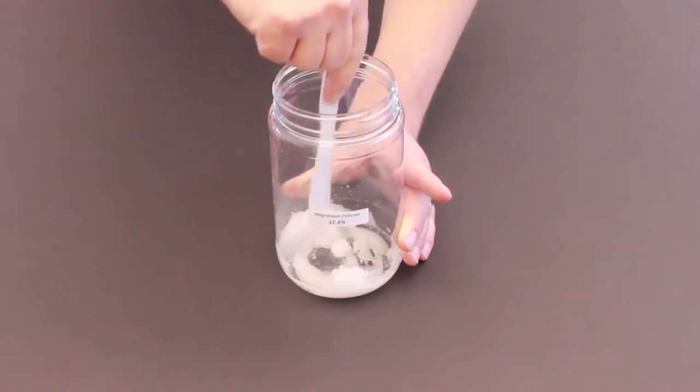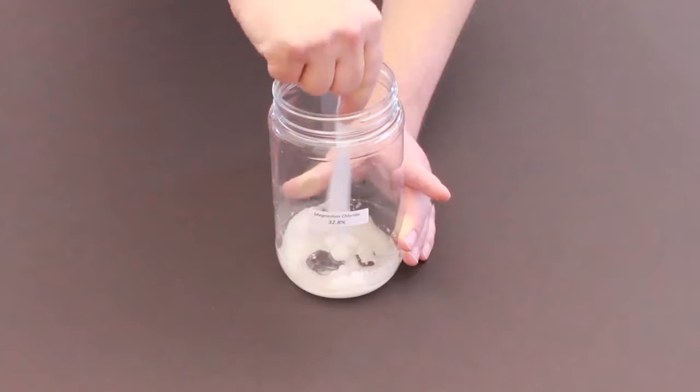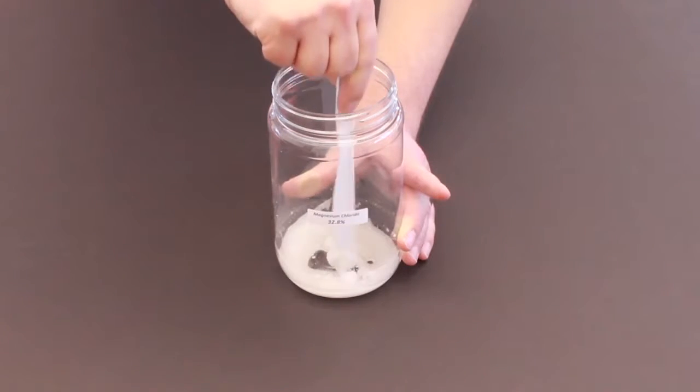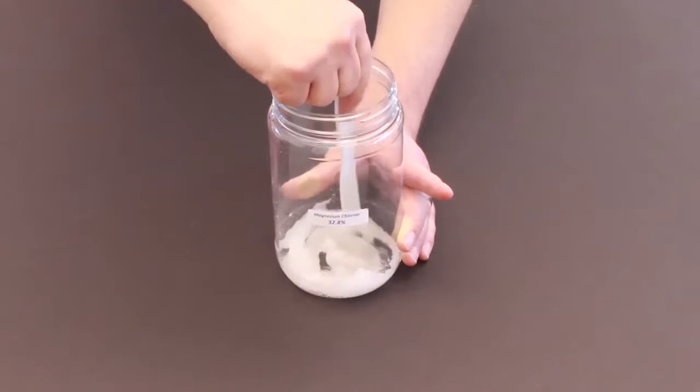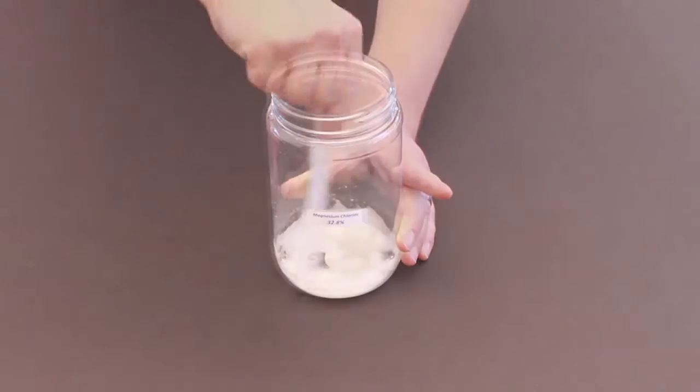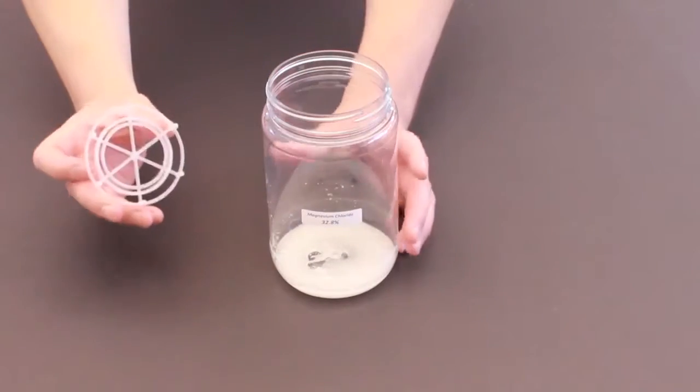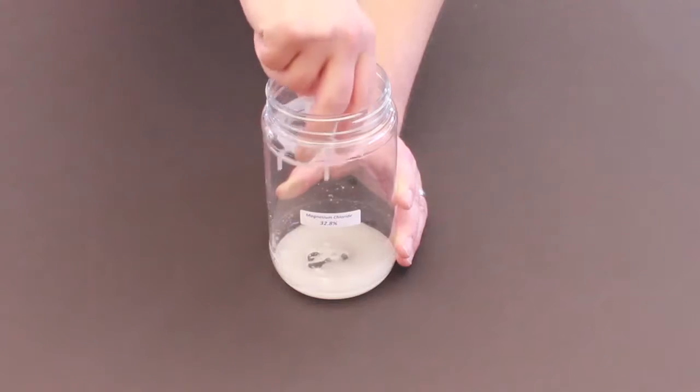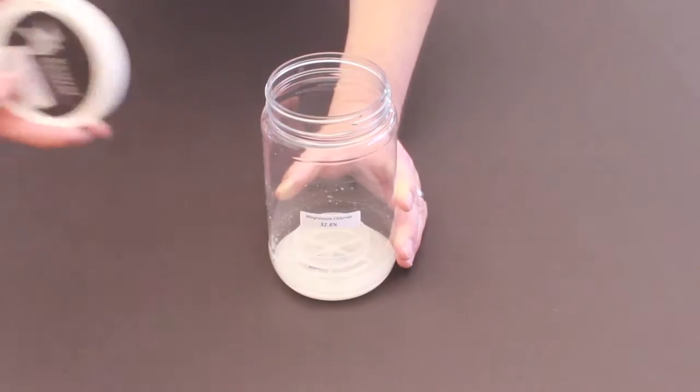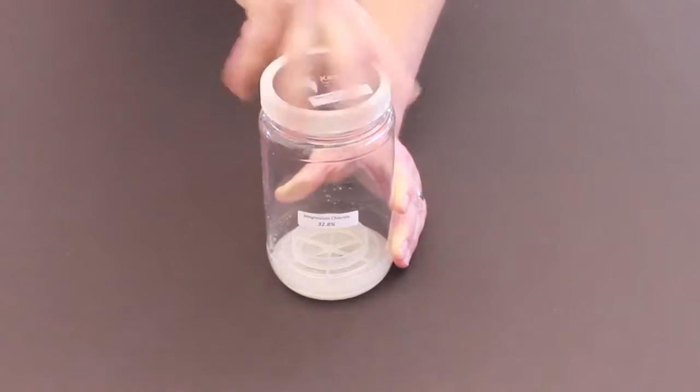Again, we are trying to get a slurry, so if it is too solid or it is too liquid, then we haven't gotten our right result. Once we are done, we will take the other grid spacer and put it in with the prongs to the bottom. Take our lid and close it up tightly.